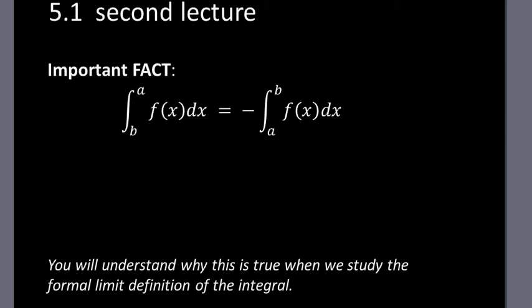We start this second video in 5.1 with a very important fact. This fact will allow us to interpret all integrals in terms of signed area, regardless of whether the upper limit is smaller or larger than the lower limit. The integral from b to a of f(x) dx is negative 1 times the integral from a to b of f(x) dx. You can switch the upper and lower limits and multiply that result by negative 1.